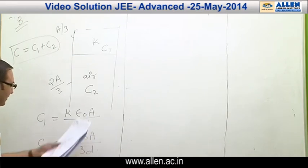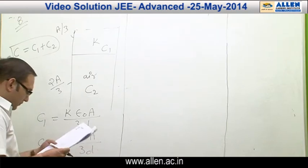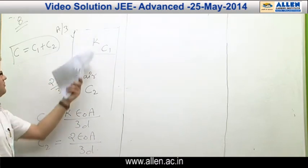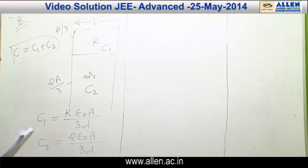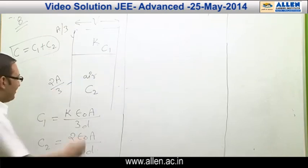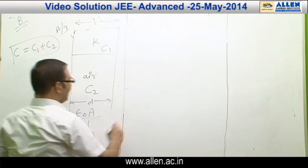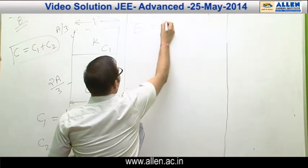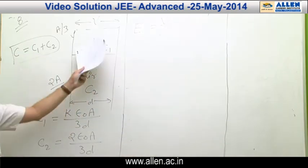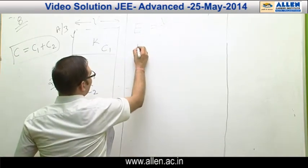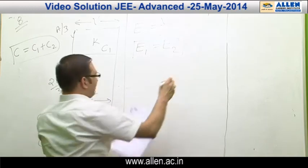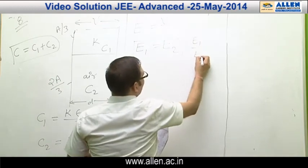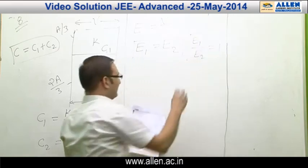Since both parts are in parallel, the potential difference across each is the same. The separation d is also the same. Using E = V/d, the electric field intensity in both parts would be the same, so E1 = E2 and the ratio E1/E2 = 1. Therefore, the first part (Answer A) is correct.